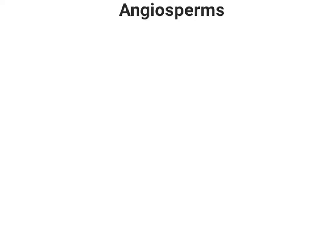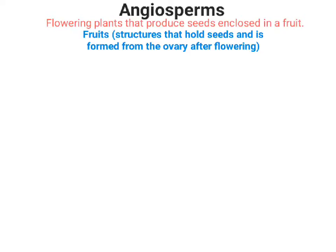Today we're going to look at angiosperms. Angiosperms are flowering plants that produce seeds enclosed in a fruit. What is a fruit? A fruit is a structure that holds seeds and is formed from the ovary after flowering.